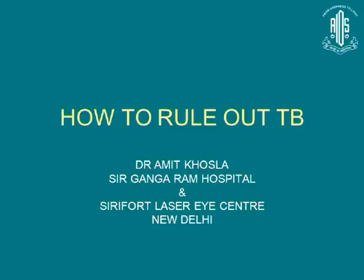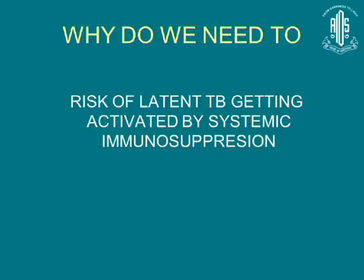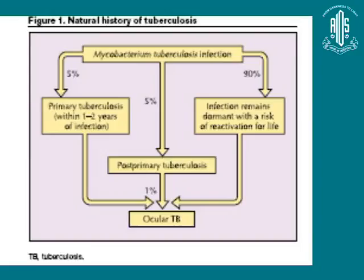Why do we need to rule out tuberculosis? Because there is always a risk of latent TB getting activated when we are going for immunosuppressive therapy. We are suppressing the immune system and there is a risk that latent TB may get reactivated. About 10% of people infected by Mycobacterium tuberculosis will develop tuberculosis within 1-2 years, and the remaining 90% will remain dormant and can be reactivated later — this is the subset we are worried about.